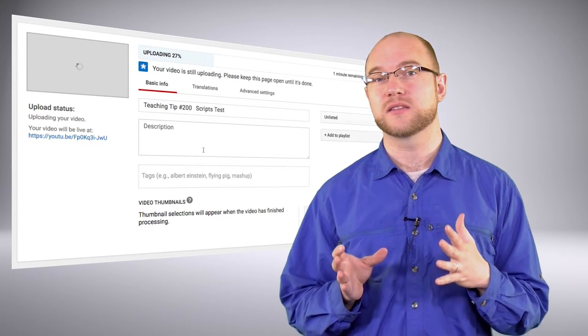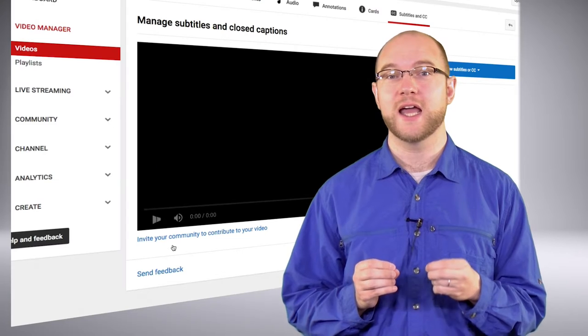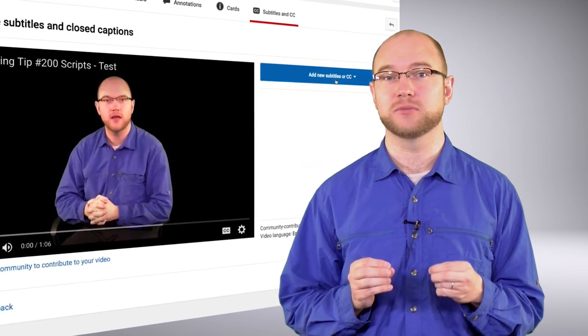Next, I'll select the Subtitles and Closed Captions button below the video. Then select the blue Add New Subtitles or Closed Captions button.